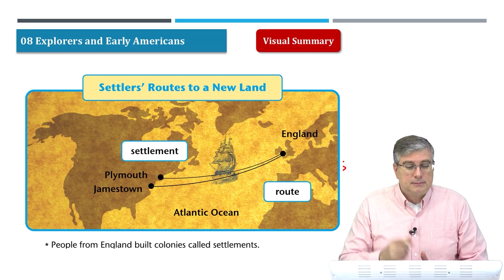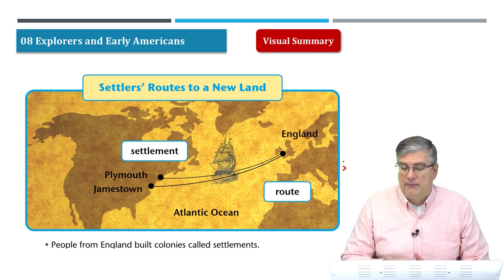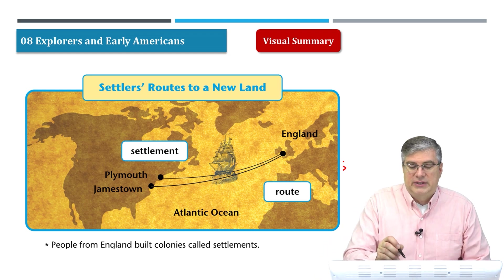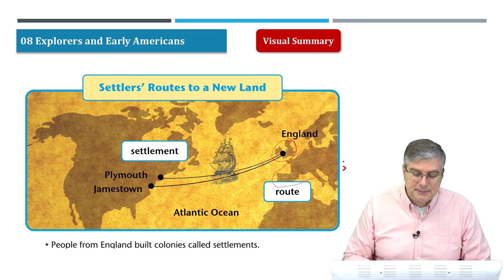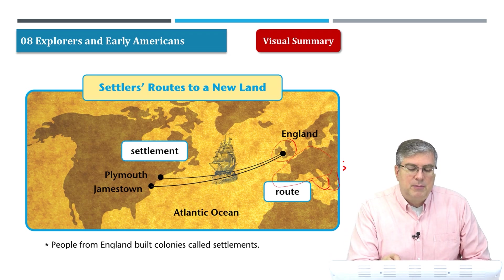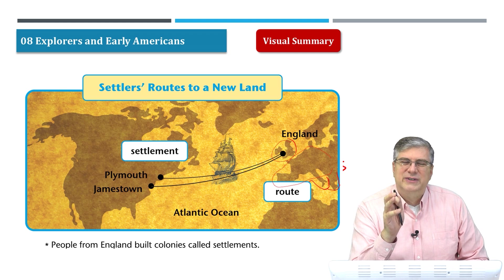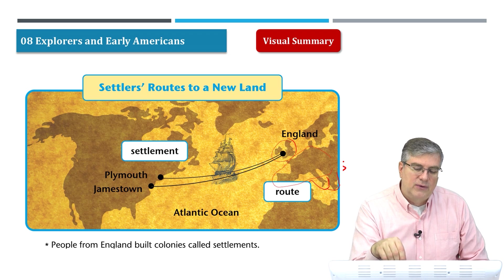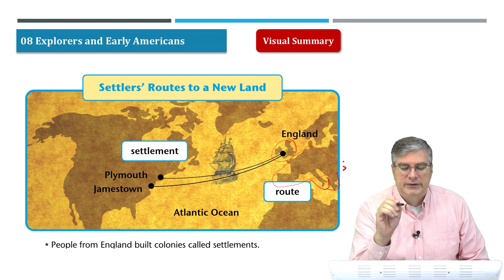Let's move on to the main ideas. One main idea is the settlers' route to a new land. This map shows that many early American settlers came from England. Europe is here. The most people in the early days of American settlement — we're talking about the 1500s, more the 1600s — most of the settlers came over from England to America. Later, a lot of Germans came over, and then other European countries, but the very earliest settlements were from England.